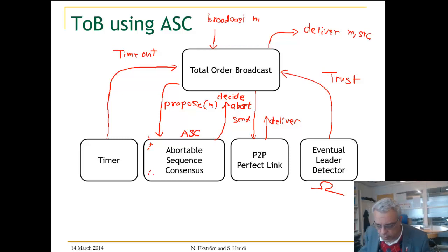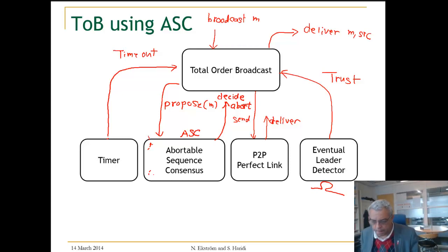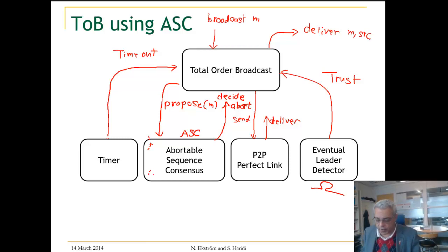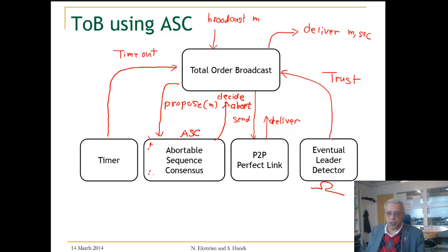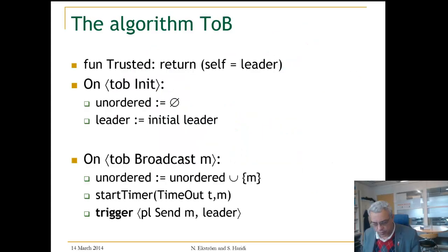Here is the algorithm, which is actually quite efficient as long as the failure detector is good. Let us first have a small auxiliary function called trusted, which basically tells whether the current process is a leader or not. We have just two local state variables: unordered and leader. Leader will be initialized to the initial leader from the leader election abstraction.